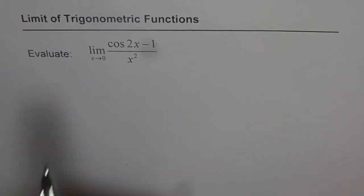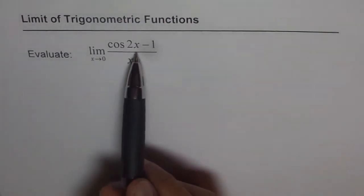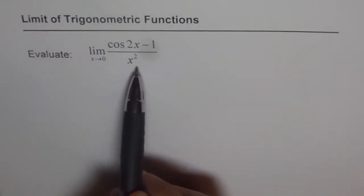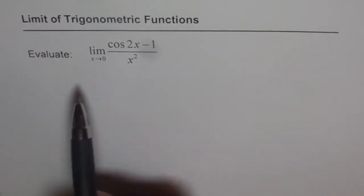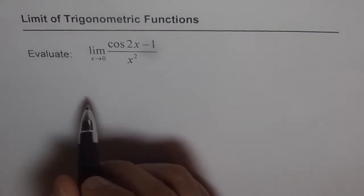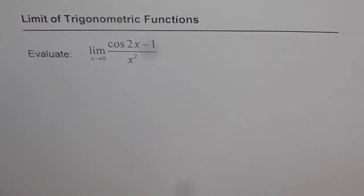Let us evaluate the limit of function cos 2x minus 1 over x squared when x approaches 0. Now, if you remember, what is cos 2x equals to?